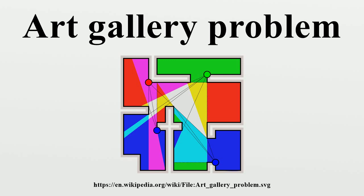Once a three-coloring is found, the vertices with any one color form a valid guard set, because every triangle of the polygon is guarded by its vertex with that color. Since the three colors partition the n vertices of the polygon, the color with the fewest vertices forms a valid guard set with at most ⌊n/3⌋ guards.